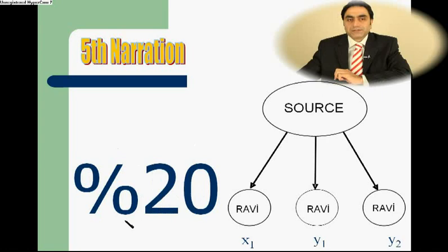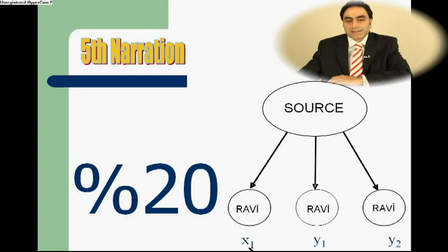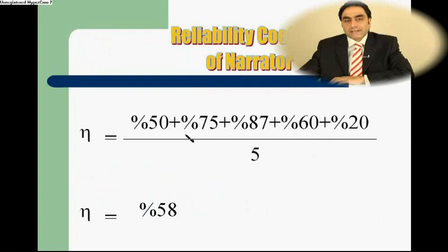In the fifth narration, our narrator R comes with a narration but another unknown person Y1 is denying him, and there is another one Y2 also denying him. So his percentage of success in this narration is only twenty percent. This is a very bad narration — it shows that X1 is highly likely doing inaccurate narration.